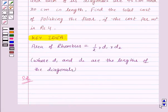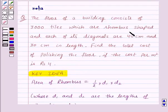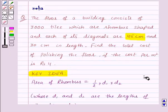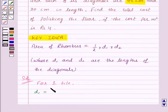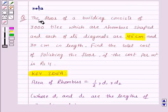So first of all, let us find out the area of one tile. For one tile, d₁ is the length of one diagonal, that is 45 centimeters, and d₂ equals the length of the second diagonal, that is 30 centimeters.